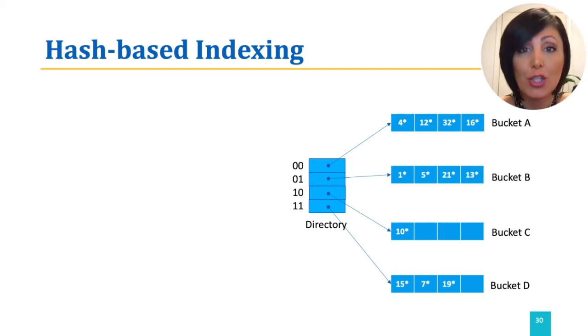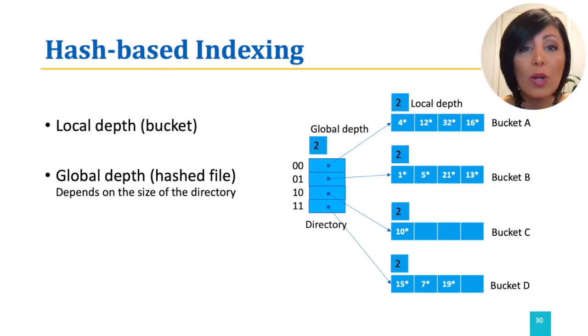Before seeing the results of the operation, I just want to mention two numbers in the current situation of the buckets. Global depth, which is 2 here, and local depth, which is also 2 for all of the buckets. Global depth of the hashed file indicates the D last bits of a binary number, with D being 2 here, and is kept as part of the header of the file. Local depth is also the D last bits of a binary number for each bucket.